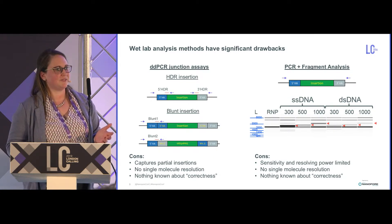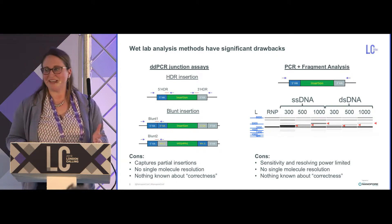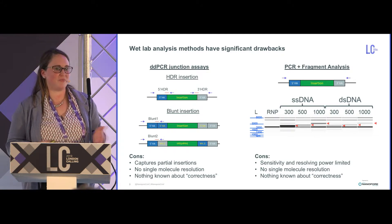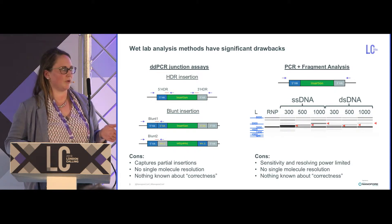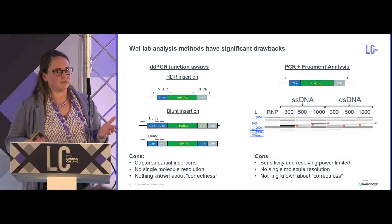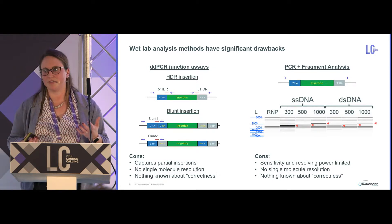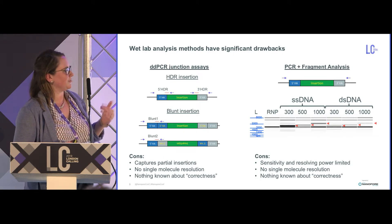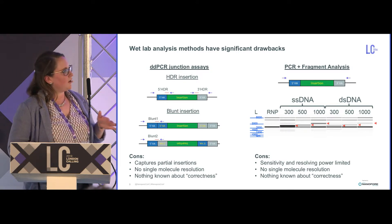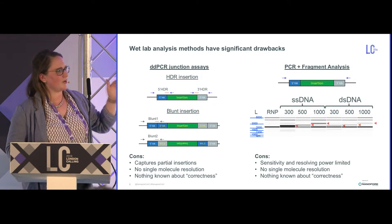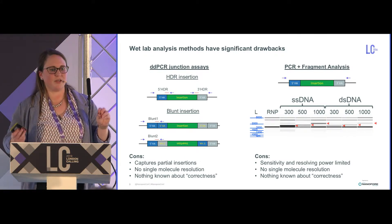Some cons with these methods: droplet digital only has the potential to capture partial insertions, but we want to quantify what amount is partial versus complete full insertion — that's our ultimate aim. There's also no single-molecule resolution; it's all done in a pooled polyclonal cell population, giving relative frequency in that pool rather than what's happening at the single-molecule level. The PCR method lacks sensitivity, and looking at fragment sizes tells you nothing about whether the insertion is correct or if indels are present alongside it.